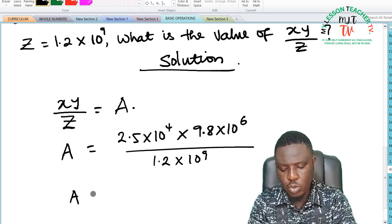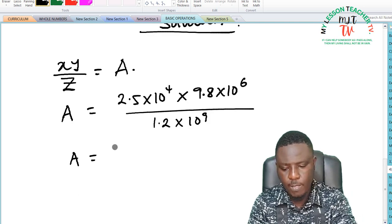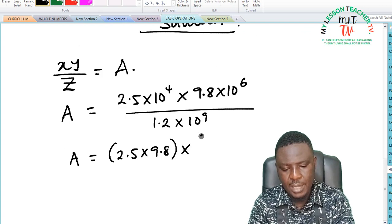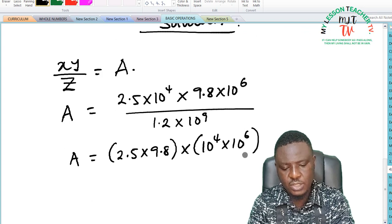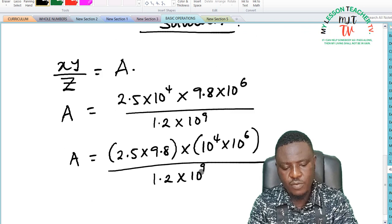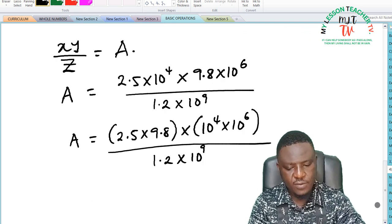A now, which is equal to 2.5 times 9.8 times 10 raised to the power of 4 times 10 raised to the power of 6, all divided by 1.2 times 10 raised to the power of 9. Again, simplifying this further.